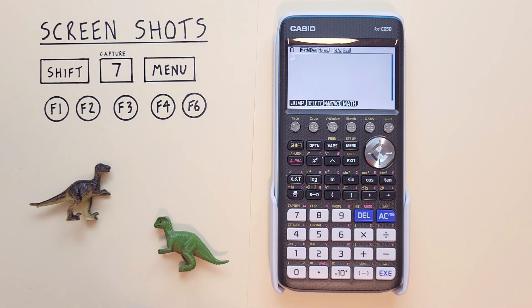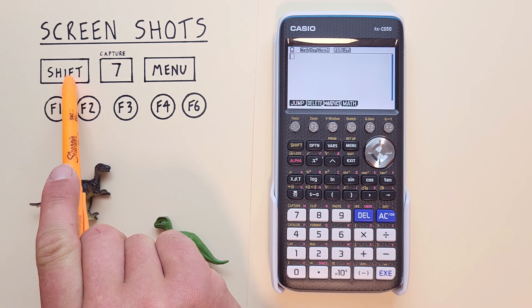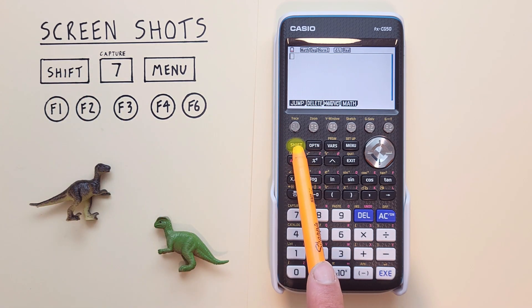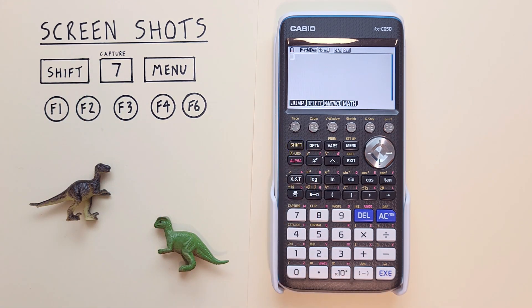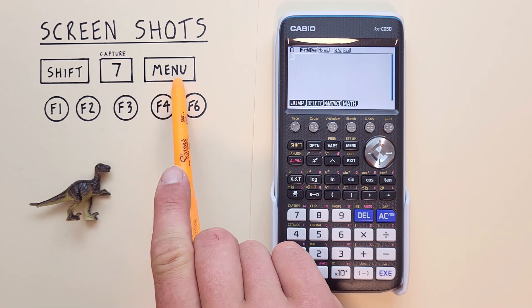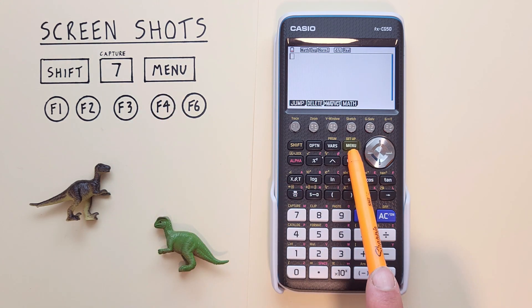To do this we'll use the shift key that looks like this located here, the 7 key with the shift function of capture that looks like this located here, the menu key that looks like this located here.